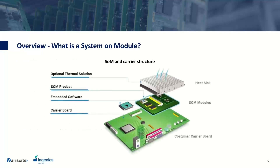A quick overview of what a system on module is: the SOM is the brain of the product. It comes with all the important features — the processor, memory, storage, audio, Ethernet, Wi-Fi — and then you only need to design a carrier board that the SOM attaches into, along with a thermal solution like a heat sink. Together, the SOM and your carrier board is how the SOM is integrated into different products.